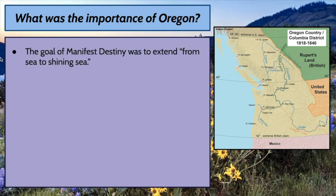The goal of Manifest Destiny was to extend from sea to shining sea. As we begin this story, America currently ends at the crest of the Rocky Mountains, and everything west of that crest is territory that is in dispute or has not yet been resolved. We always have to keep in mind that Native Americans were not particularly consulted, but they did very much exist.